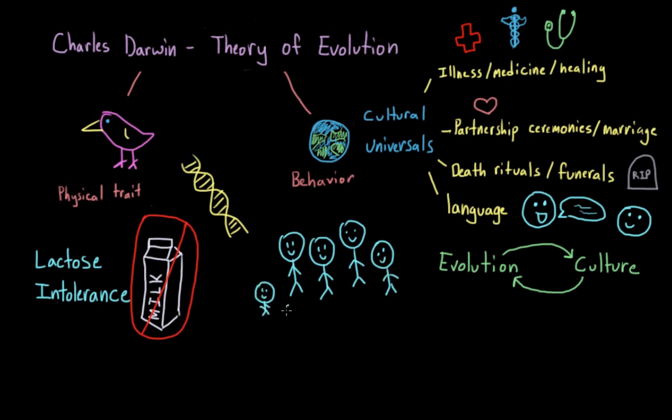And consequently, they left more surviving offspring that could also digest milk. So while the rest of us tend to get stomachaches if we have too much dairy, these individuals are able to eat all of the ice cream they want because of how their ancestors' culture directed their evolution.